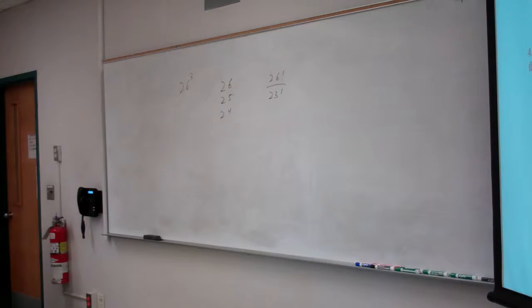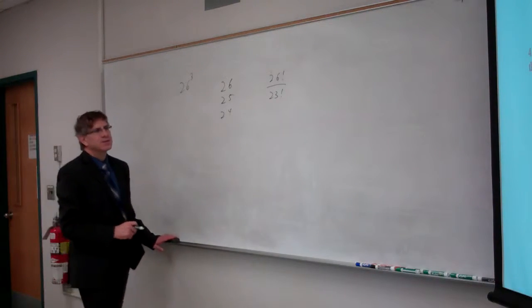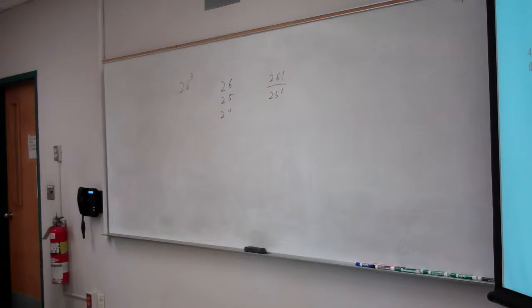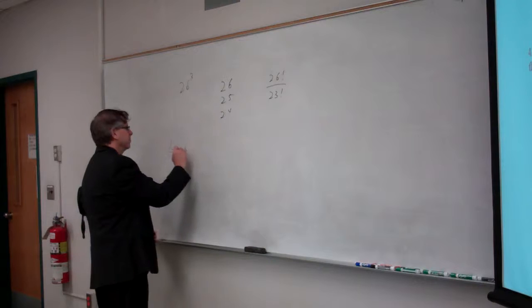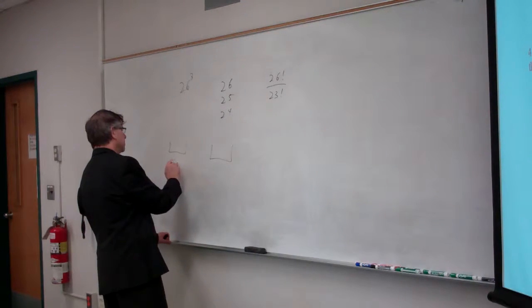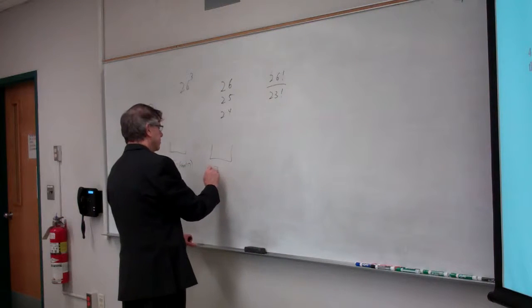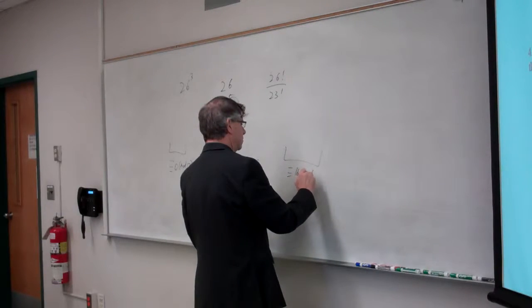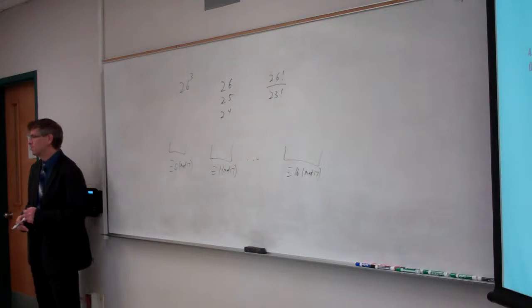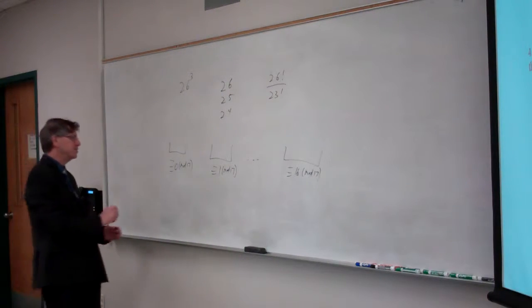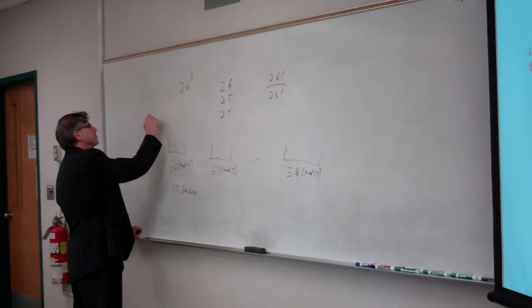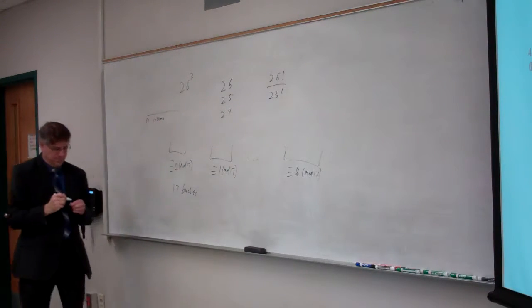Question 4 was a pigeonhole question. A set S consists of positive integers, no two of which are congruent to each other mod 17. What's the maximum number of elements in the set S? So make yourself buckets based on congruence mod 17.